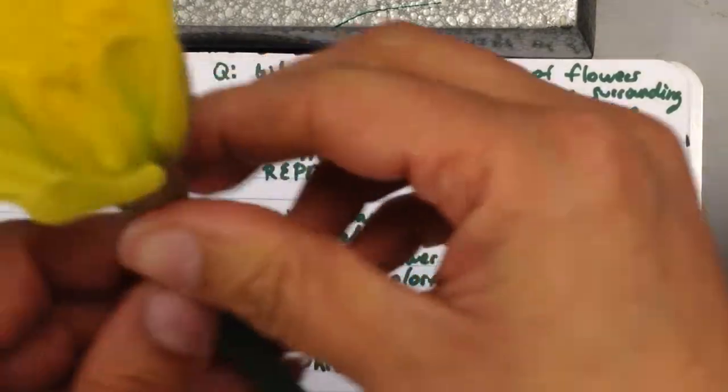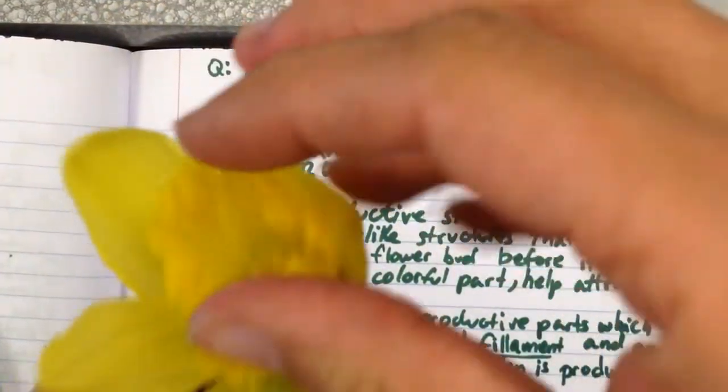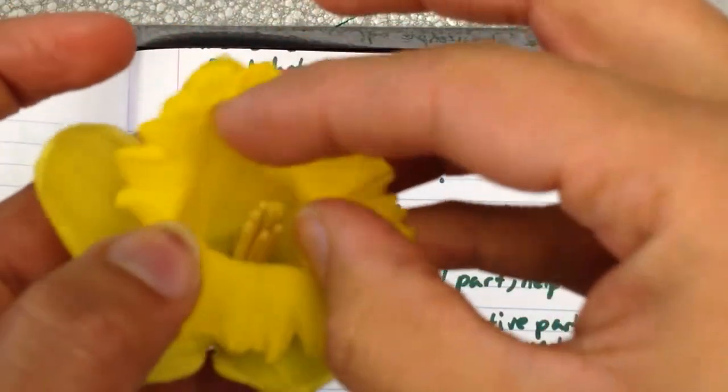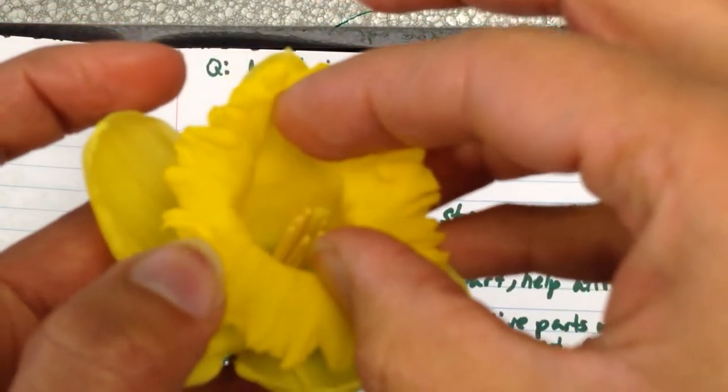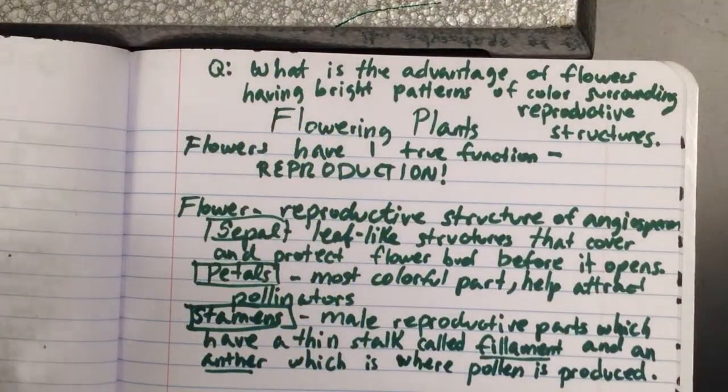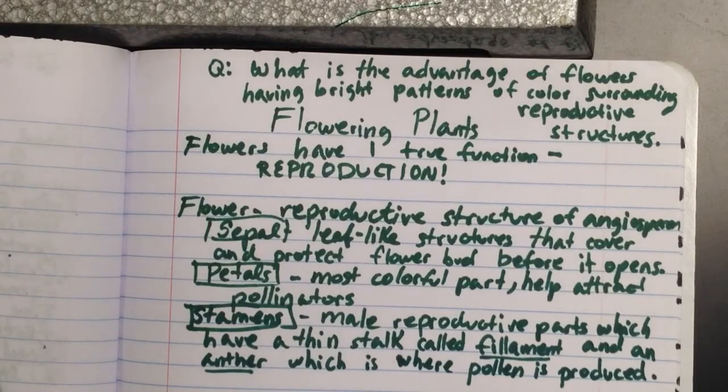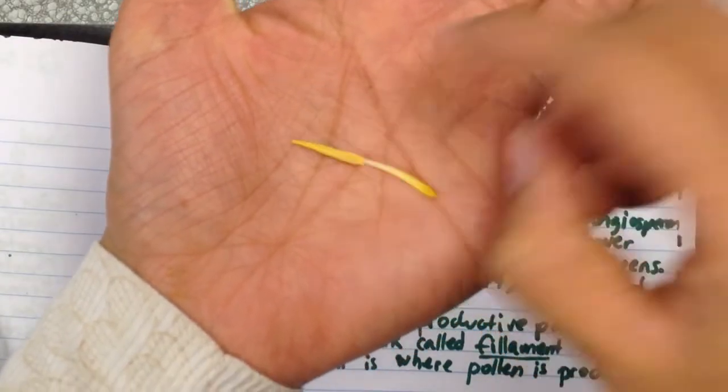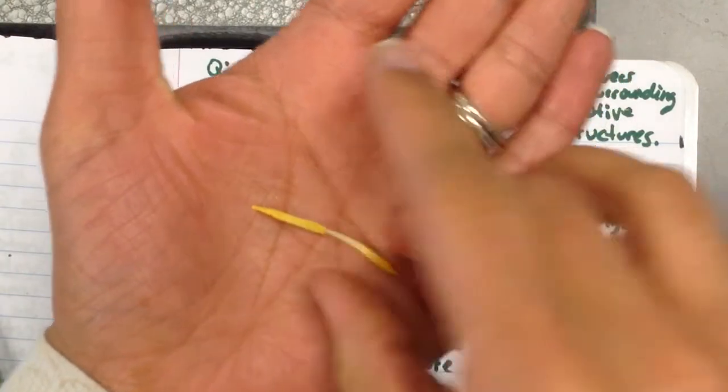So on our opening flower here, you can kind of see, if I open up this petal a little bit, you can see these guys sticking up here around the edges. Those are the anthers of the stamen. And I'll show you one that I pulled out. All of this is the stamen. This is the filament, and this up here is the anther. And if you were to touch it, you would get actual pollen on your fingers.